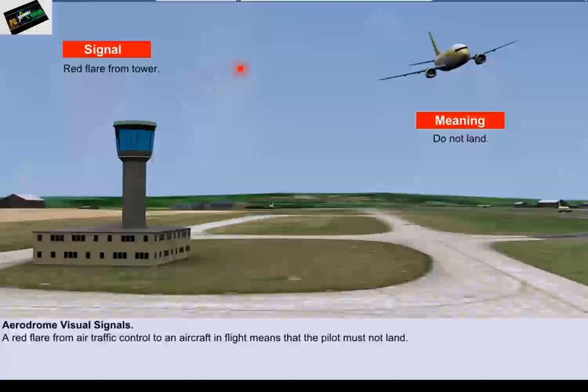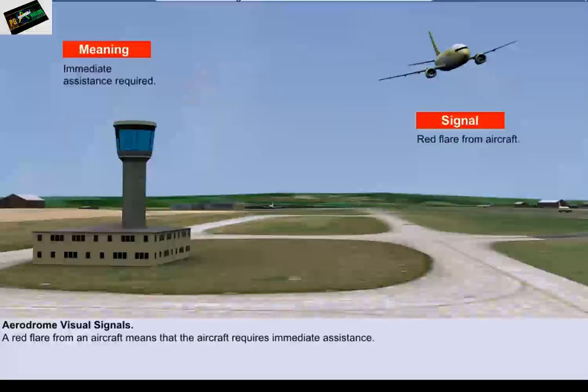A red flare from air traffic control to an aircraft in flight means that the pilot must not land. A red flare from an aircraft means that the aircraft requires immediate assistance.